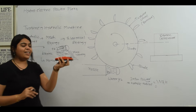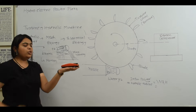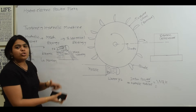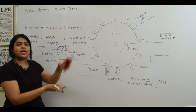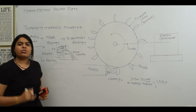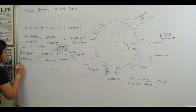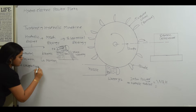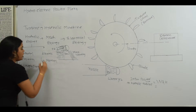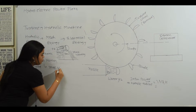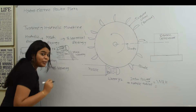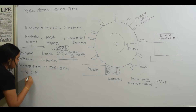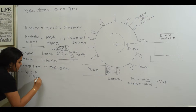Here is a duster — I have kept it in a place like this. Now it has potential energy, and when I release it, it has mass and velocity; when it is moving, it has kinetic energy. Now, potential energy is a function of weight and head. Head is nothing but the difference between two levels. Potential energy equals W into H, where W equals mass into gravity into H.